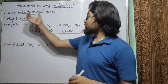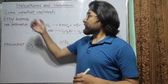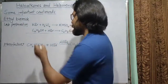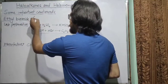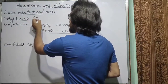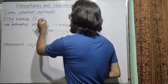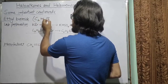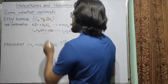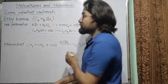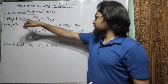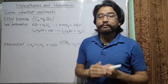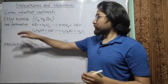The first important compound is ethyl bromide or bromoethane. The formula of ethyl bromide is C2H5Br, which can also be written as CH3CH2Br. This is the formula of ethyl bromide.